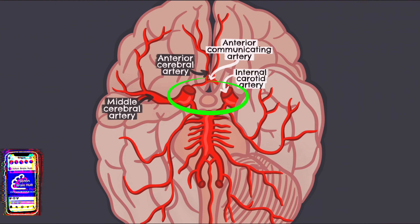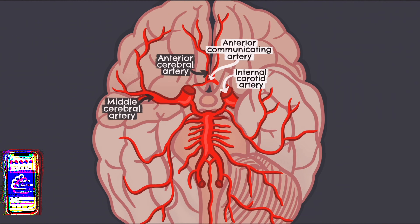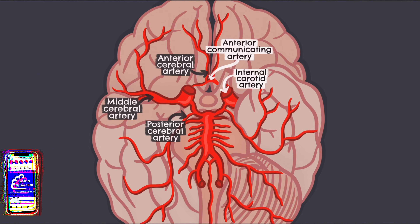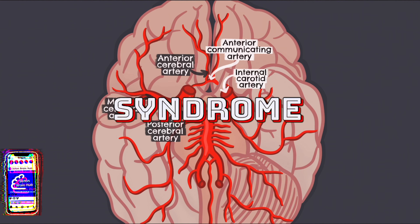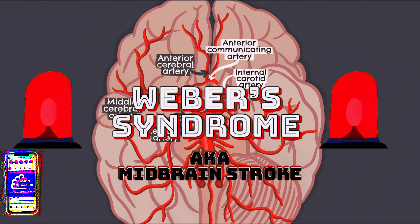The internal carotid arteries begin at the carotid bifurcation on either side of your neck. The third and final major cerebral artery is the posterior cerebral artery. These arteries supply the occipital lobe, the inferior temporal lobe, and other deep structures such as the thalamus. Occlusion of branches of the posterior cerebral arteries can result in Weber's syndrome, characterised by ipsilateral cranial nerve 3 palsy and contralateral weakness of the upper and lower limbs.